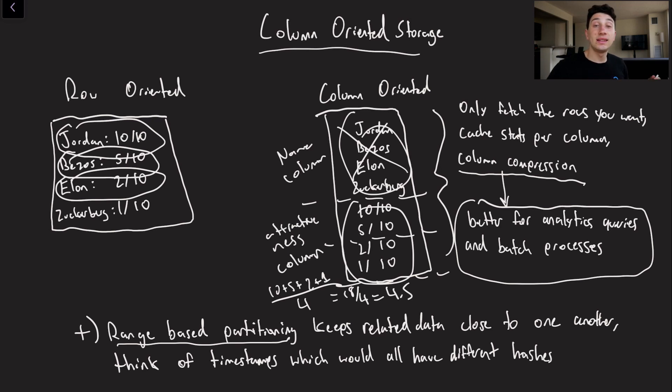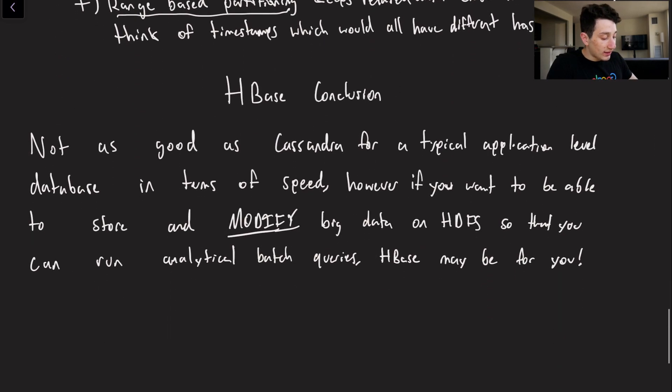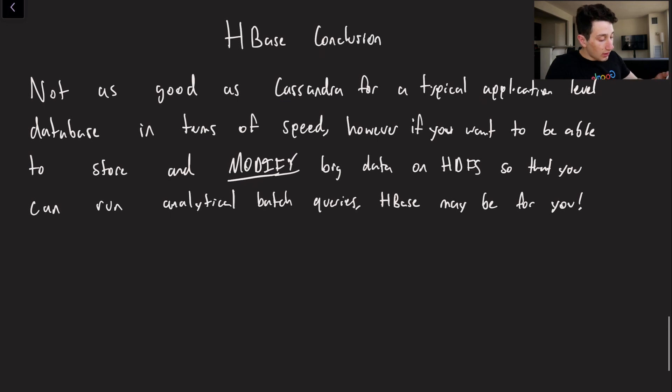But when we use range based partitioning, it means that all of the timestamps that are similar to one another are going to be on the same node. And again that just means passing less data over the network and we can perform our computations a little bit quicker. That's kind of a niche thing, but even still it doesn't really hurt for this type of thing.